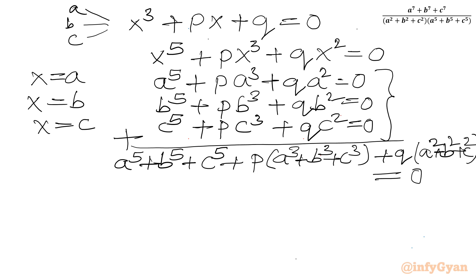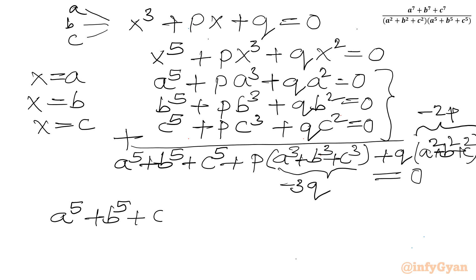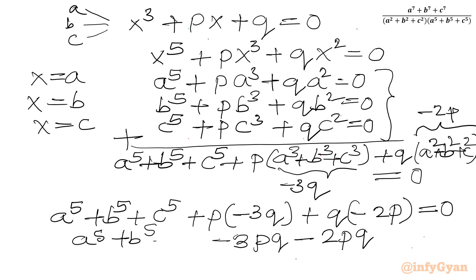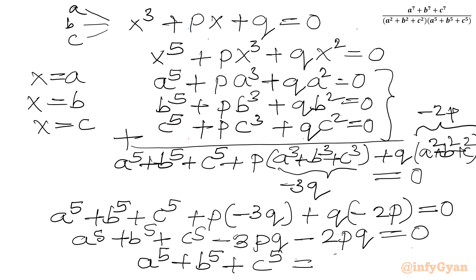Applying the values: A cubed plus B cubed plus C cubed equals minus 3Q, and the sum of squares equals minus 2P. So A to the fifth plus B to the fifth plus C to the fifth plus P times minus 3Q plus Q times minus 2P equals 0, giving minus 3PQ minus 2PQ. The conclusion is A to the fifth plus B to the fifth plus C to the fifth equals 5PQ.